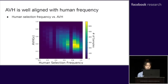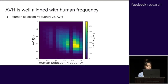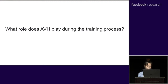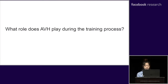The empirical result shows that AVH is strongly correlated with human selection frequency. Compared to model confidence, AVH can better represent human visual hardness in CNNs. After discovering such strong correlation, a natural question arises: what role does AVH play during the training process?